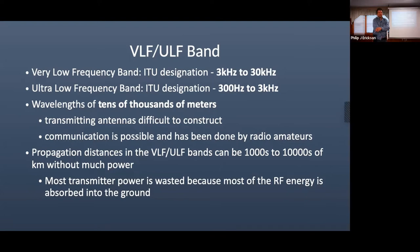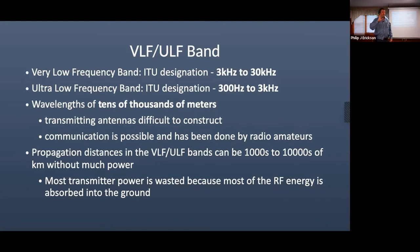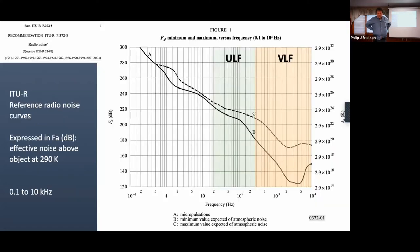According to the ITU — the International Telecommunications Union — VLF is 3 kHz to 30 kHz. Remember, the 2200-meter amateur band is at 134 kHz, so VLF is about an order of magnitude below that. ULF is 300 Hz to 3 kHz — an order of magnitude below that. This means the wavelengths are tens of thousands of meters or longer. You're not going to construct an easy dipole at VLF or ULF — you'd need the entire state of Montana. Transmitting antennas are horribly inefficient even for professionals.